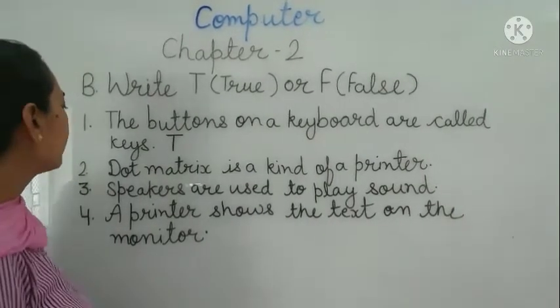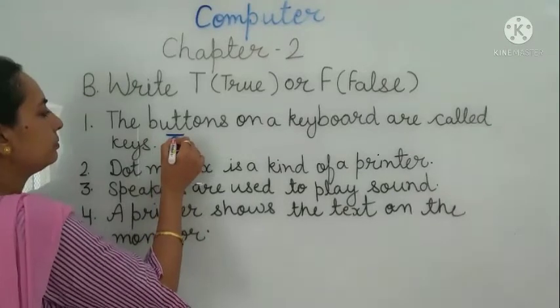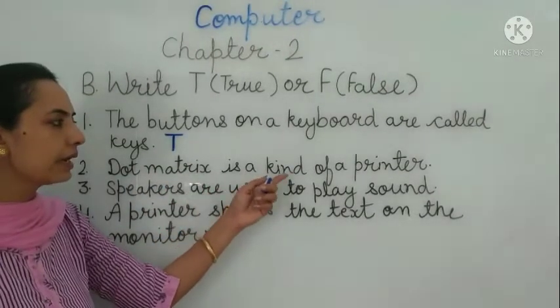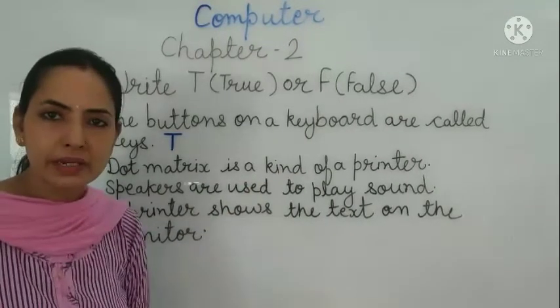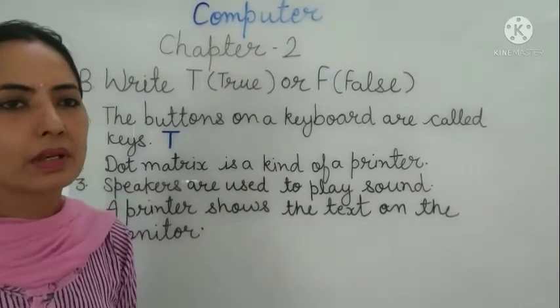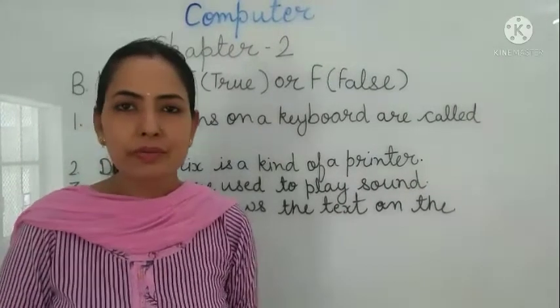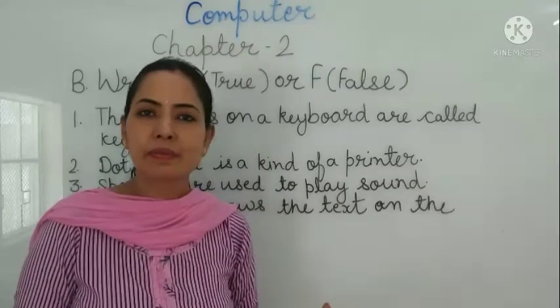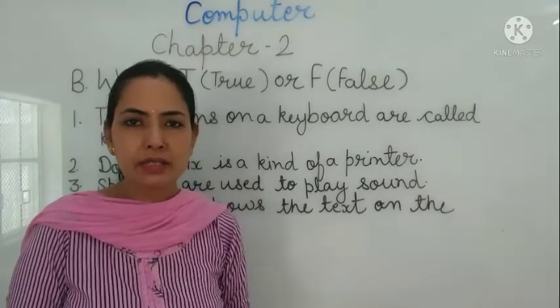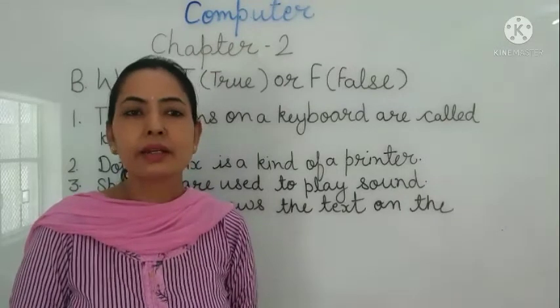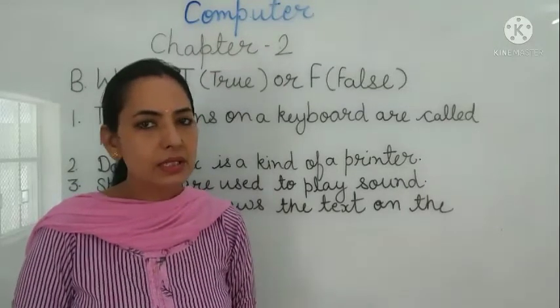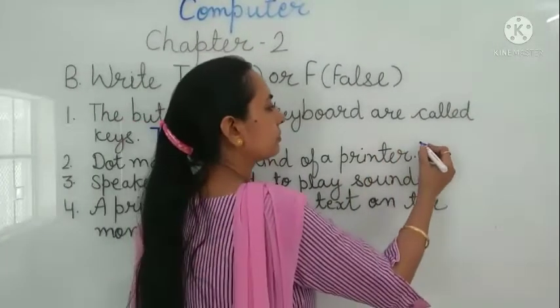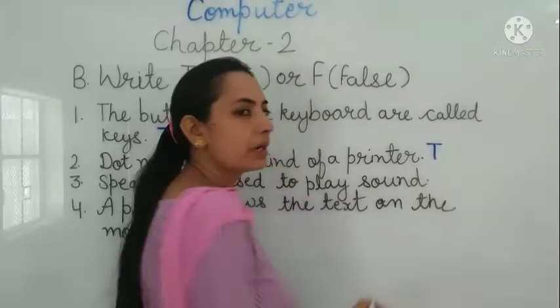Next, number 2, dot matrix is a kind of a printer. We have different types of printers, we have read about the printer and we have three types of printers. So yes, this is a type of printer. We can write here true. The statement is true.